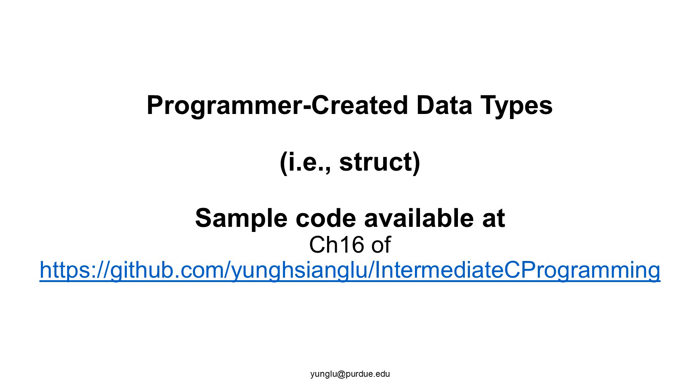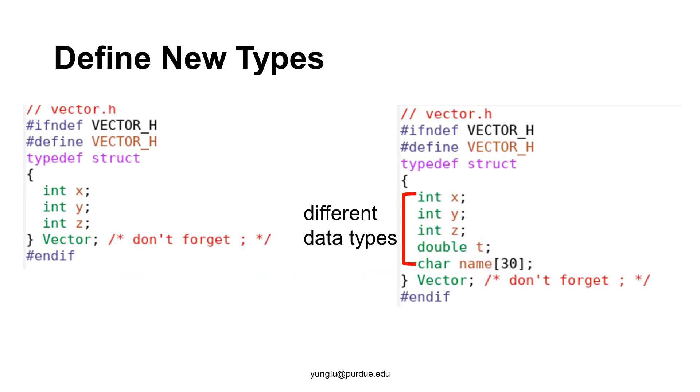Let's first see some examples of struct before we explain why it is necessary creating new data types. The first example is a new type called vector and it has three attributes: x, y, and z. In this example, all attributes are integers.